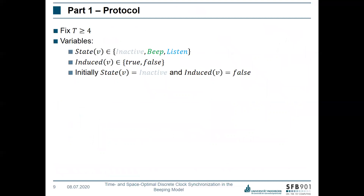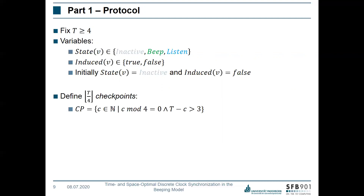Our protocol fixes a period t ≥ 4. Each node v has two variables: a state variable (inactive, beeping, or listening) and a boolean flag called 'induced,' initially set to false. The idea of this flag is that once a node is induced by recognizing a beep from a neighbor, the flag is set to true, and the next time it beeps will not be at clock value 0 but at the next checkpoint. Checkpoints are defined by taking every fourth clock value from the set of possible clock values.